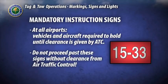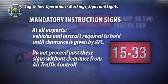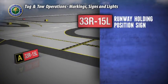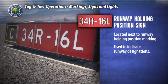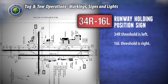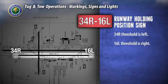It is critical that you do not proceed past these signs without clearance from air traffic control. The runway holding position sign is located next to the holding position markings on taxiways or runway intersections, and is used to indicate the runway designations. The runway numbers are separated by a dash, and their arrangement indicates the direction of the corresponding runway threshold. This example shows that the threshold for runway 34R is to the left, and the threshold for runway 16L is to the right.